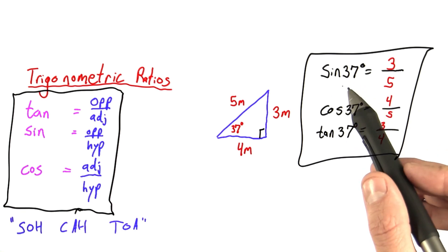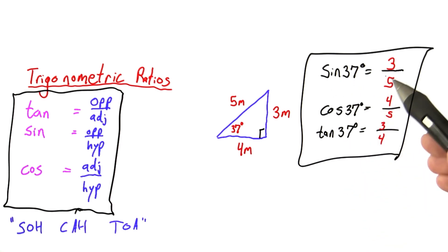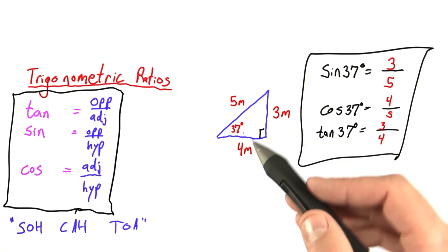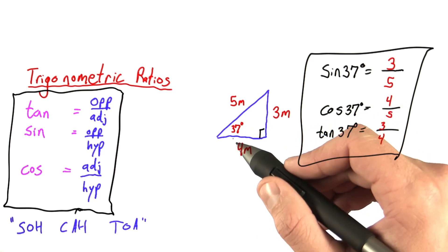It doesn't seem to make sense to keep calculating the sine of 37 degrees every single time we encounter a triangle with a 37 degree angle. This number is never changing. The sine will always be 3 over 5.